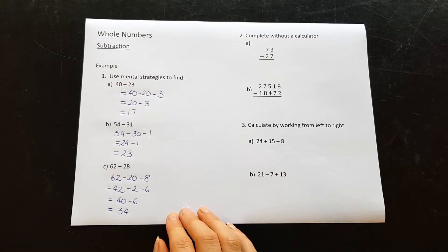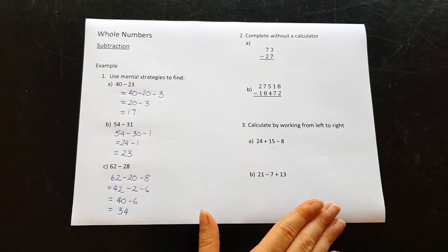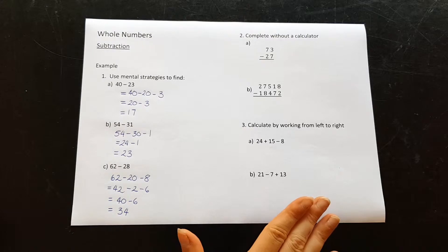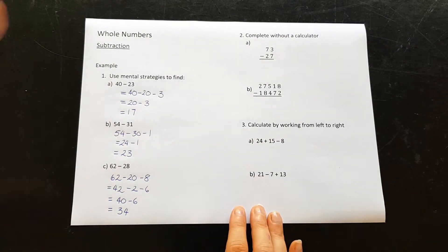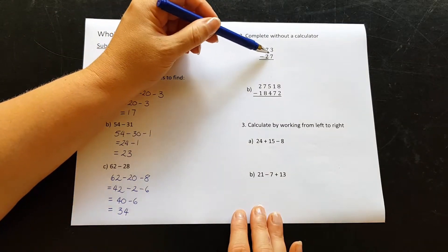Now we come to question 2, which is to do our columns using column subtraction. Again, still without a calculator. So we want to do 73 subtract 27.